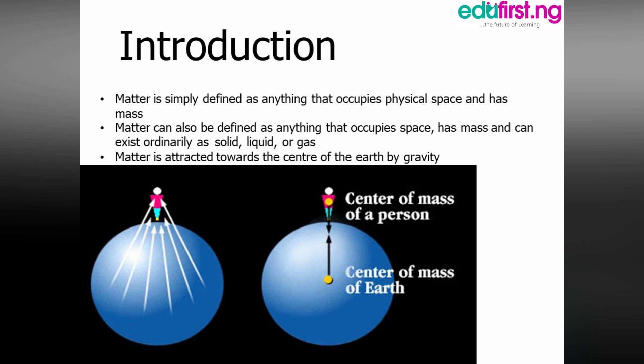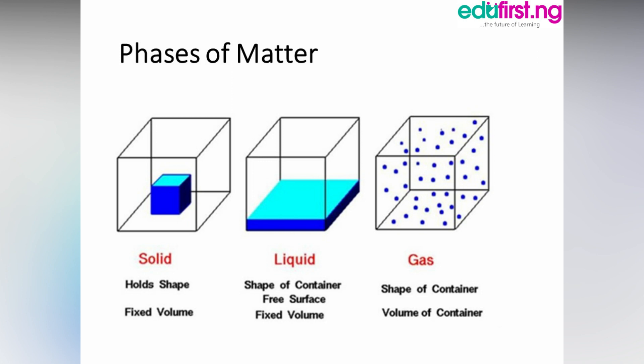Matter exists in three forms: it is either in liquid form, solid form, or gas. Matter is attracted towards the center of the Earth by the force called gravity, as you can see in the diagram below. Now let's move on to phases of matter. There are three phases or forms by which matter exists: we have the solid form, we have the liquid, and then we have gas.